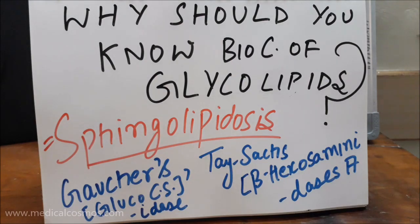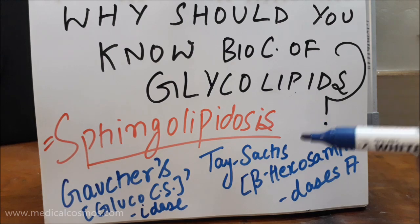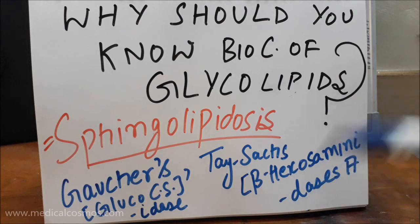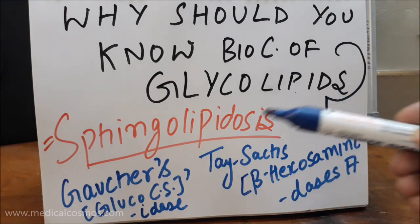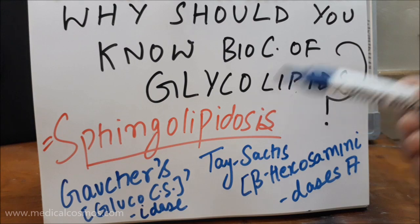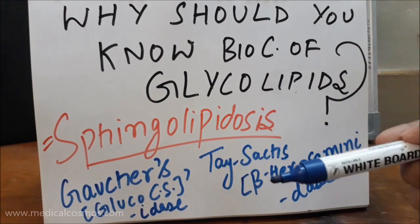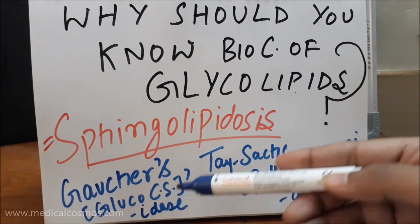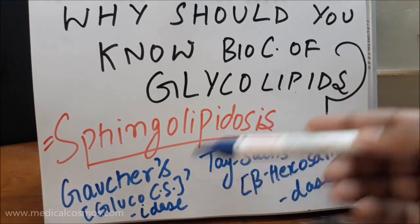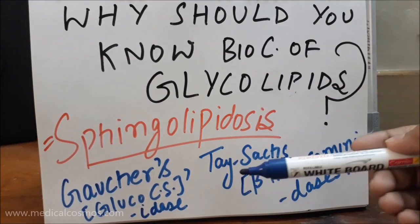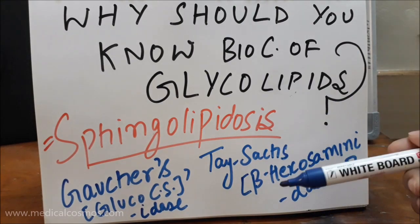Why should you know the biochemistry of glycolipids? It is because to understand the pathogenesis of disease, we need to understand the basic biomolecules taking part in that disease process. In sphingolipidoses, there is an accumulation of those sphingolipids we discussed. For example, Gaucher's disease is due to a deficiency of the enzyme glucocerebrosidase, so glucocerebroside accumulates. Another example is Tay-Sachs disease, which is due to deficiency of beta-hexosaminidase A.